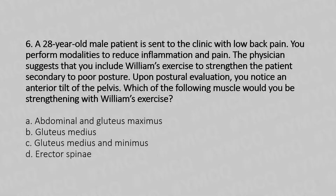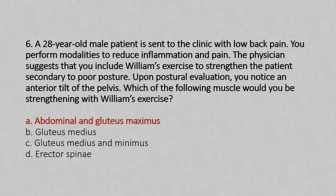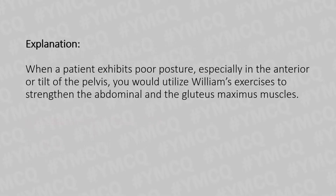The answer is Option A: abdominals and gluteus maximus. When a patient exhibits poor posture, especially an anterior tilt of the pelvis, you would utilize Williams exercise to strengthen the abdominal and gluteus maximus muscles.